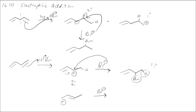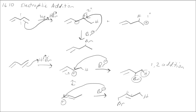When H and Br end up next to each other, this is called 1,2-addition — the proton adds at position 1 and the bromide adds at position 2, one position away. In the other case, the bromide adds at the far end. Counting from where the proton added, this is positions 1-2-3-4, so this is called 1,4-addition. There are therefore two different products: a 1,2-addition product and a 1,4-addition product.